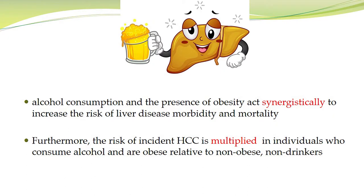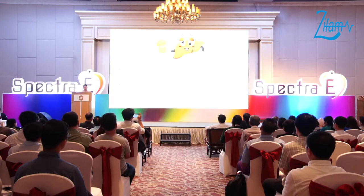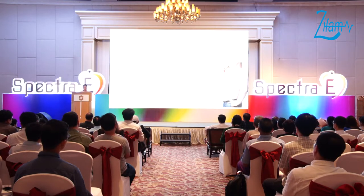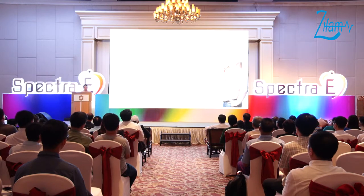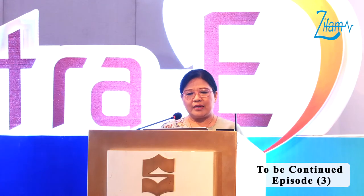Alcohol consumption and presence of obesity synergistically increase the risk of liver disease morbidity and mortality. Furthermore, the risk of incidence of hepatocellular carcinoma (HCC) is multiplied in individuals who consume alcohol and/or are obese relative to non-obese non-drinkers. Obesity is linked with prevalence among the obese population ranging from 30 to 37%. Abdominal obesity with increased waist circumference is especially more strongly correlated with liver disease.